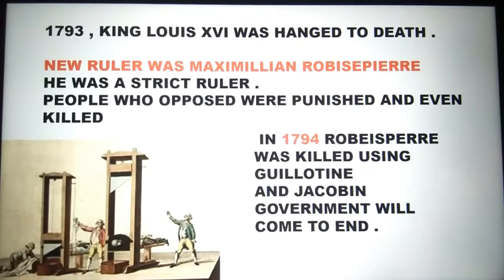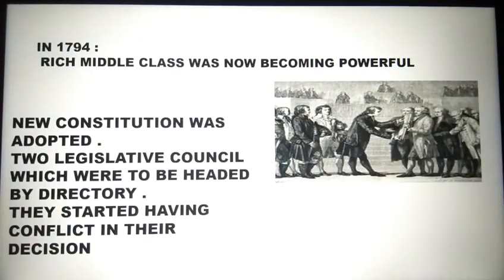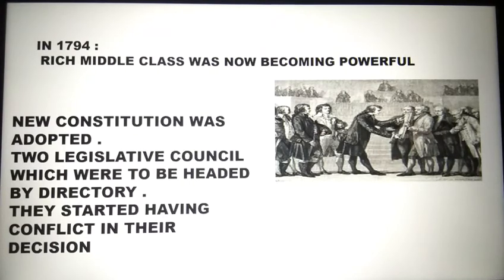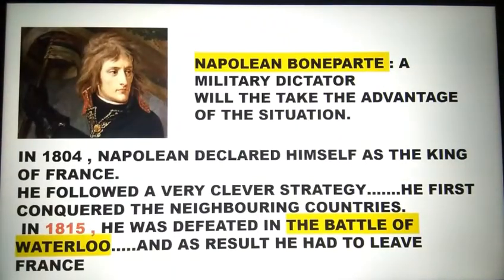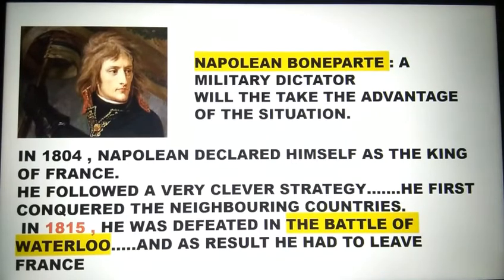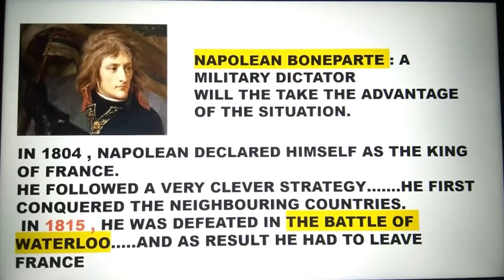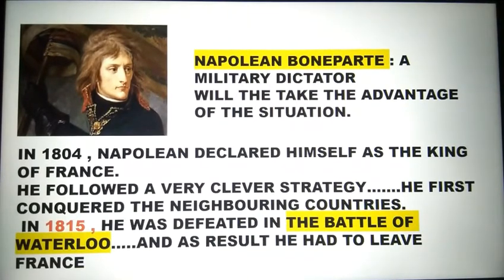Then in 1794, the rich middle class became more powerful. A new constitution was adopted and two legislative councils were formed, headed by a Directory. However, there was conflict as their decisions did not match. Taking advantage of this conflict, a new personality emerged — Napoleon Bonaparte, a military dictator. He took advantage of the situation and in 1804 declared himself King of France. He followed clever strategies and conquered neighboring countries. In 1815, he was defeated in the Battle of Waterloo and as a result had to leave France.